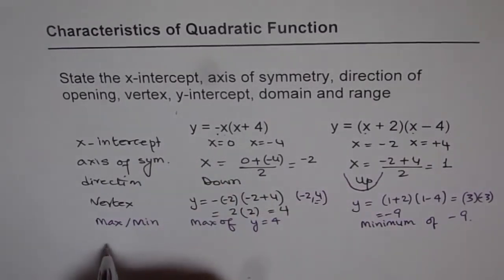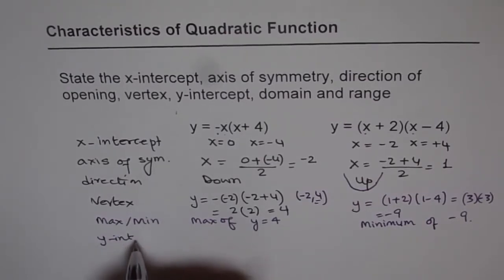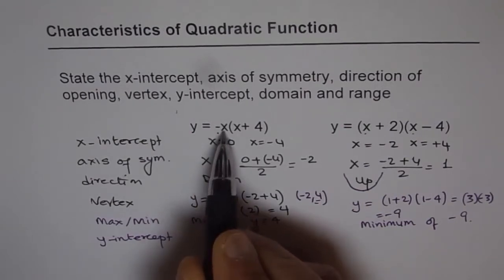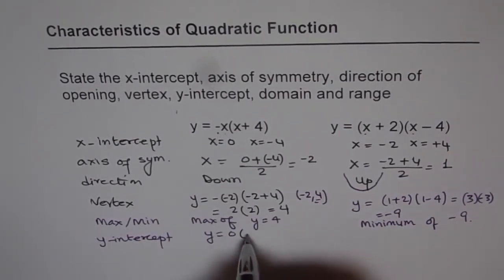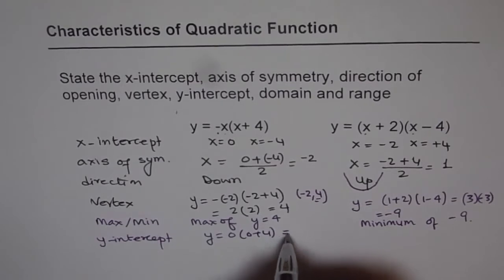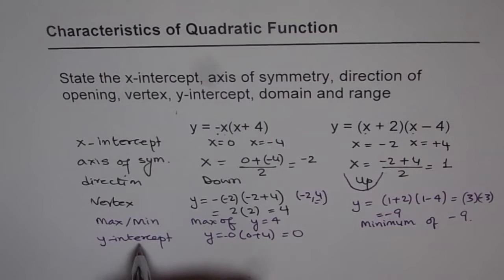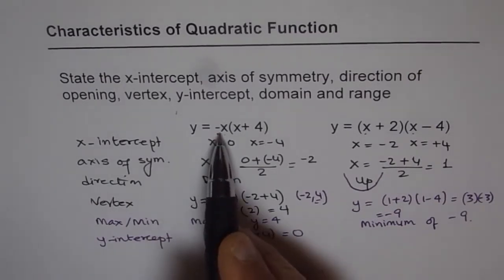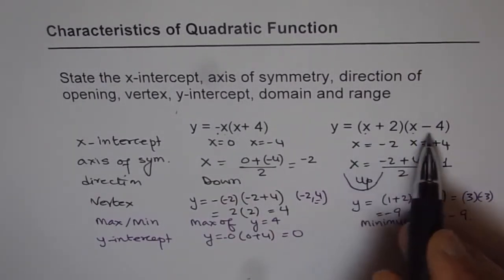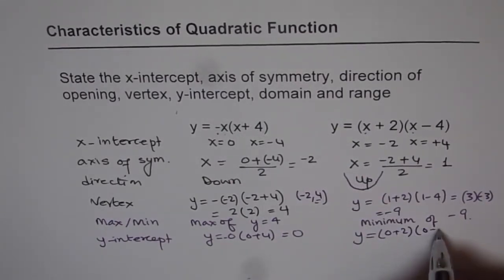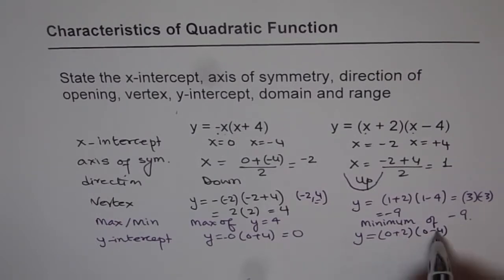Y-intercept. To find y-intercept, we need to place x equals to 0. Now as soon as I put x equals to 0 in the first equation, I get y equals to 0 times 0 plus 4 and indeed it is 0. So the y-intercept is at origin. In this case, when I put x equals to 0, I get y equals to 0 plus 2 times 0 minus 4. That is 2 times minus 4 is minus 8. At minus 8, we have the y-intercept.